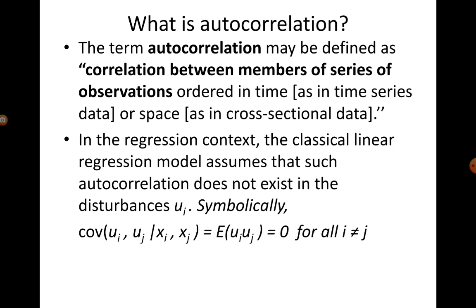In the classical linear regression model we assume that such autocorrelation does not exist. We symbolically represent this as: covariance of ui, uj given xi, xj equals the expectation of ui times uj, which is equal to zero. This is how you write symbolically that the error terms are not correlated.